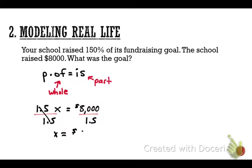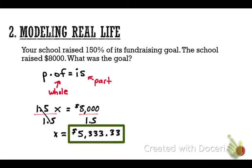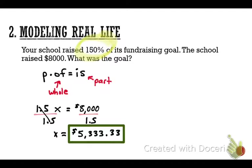The answer is $5,333.33 — the decimal repeats, but for dollars we only need two decimal places. Sense check: they had a goal of $5,333.33 but raised $8,000, which is more. They wanted 100% of their goal but raised 150%, meaning they exceeded it. So the answer makes sense.